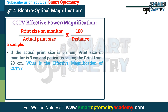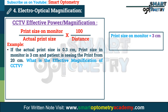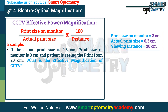For example, if the actual print size is 0.3 cm, the print size on the monitor is 3 cm, and the patient is viewing from 20 cm, what is the effective magnification of the CCTV? Here, print size on the monitor is 3 cm, actual print size is 0.3 cm, and viewing distance is 20 cm. According to the formula, effective power = 3 divided by 0.3, multiplied by 100 divided by 20.